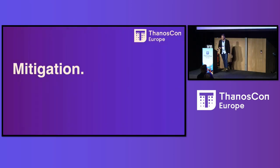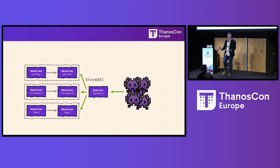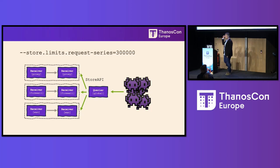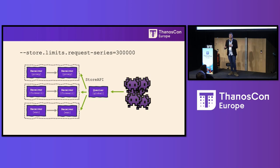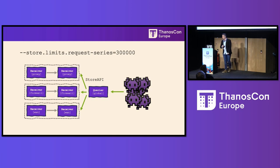What mitigation steps could we take? First, we wanted to make sure the monster query can never get through again. There's a really cool config option — store.limits — that basically tells the receiver not to try and fetch more than a certain number of series, otherwise you're going to hurt yourself. That was easy to enable. The SRE team started complaining their rules were failing, so you have to find a balance. Since then we've had no issues with receives.